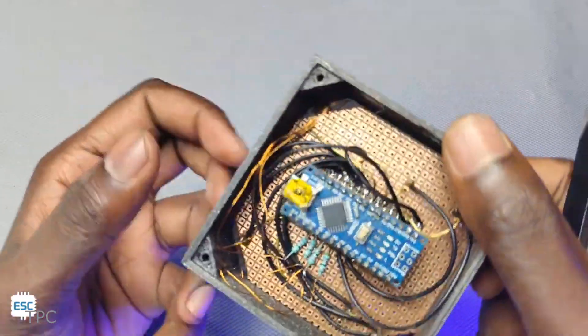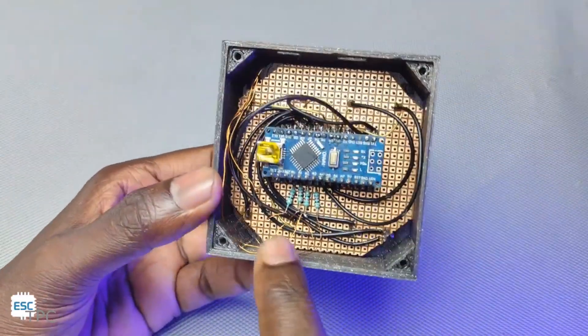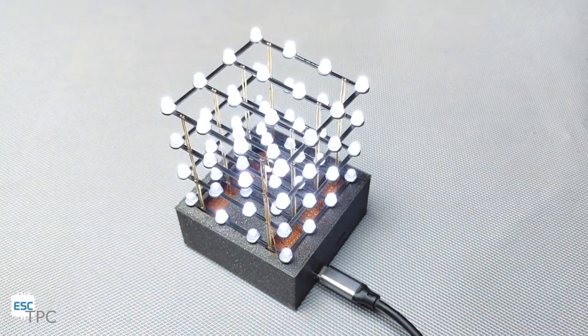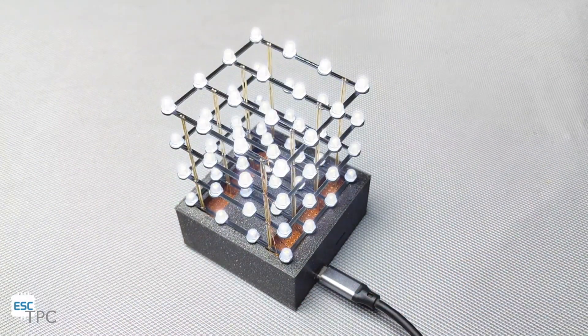Once the LED array was complete, he connected the cube to an Arduino Nano, which he placed at the bottom inside a 3D-printed enclosure, giving the project a great look.